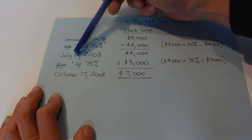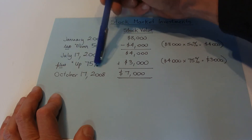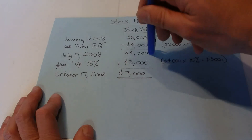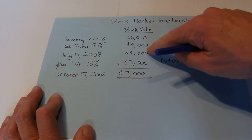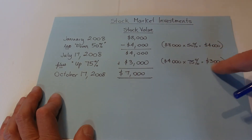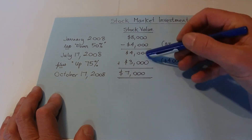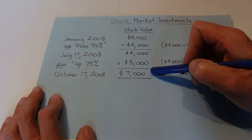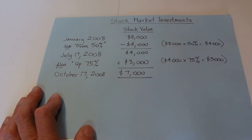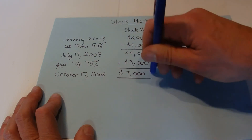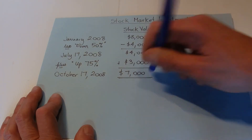Between July and October the stocks were up 75%, but that 75% is applied to the $4,000, not the original $8,000. So $4,000 multiplied by 75% equals $3,000. We add the $3,000 onto the $4,000, and that gives us $7,000.